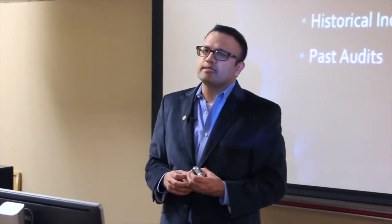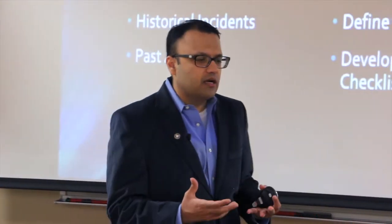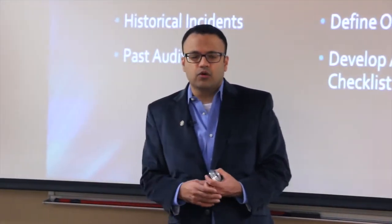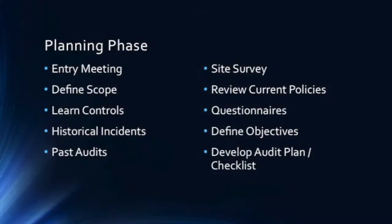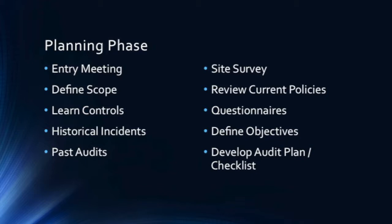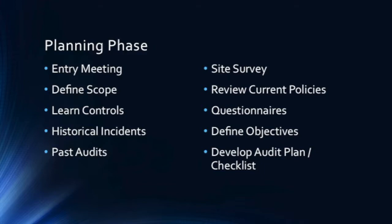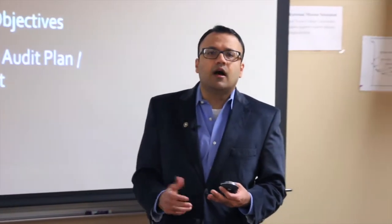The sixth element is the site survey — figuring out what items and software the organization actually has. Sometimes when you walk into an organization, they don't even know what software they have, because one department bought software that other departments are unaware of. The site survey also gathers hardware specifications. The seventh element involves reviewing questionnaires and current policies — making sure existing policies are actually being met, since policies sometimes exist on paper but are never reviewed or enforced.